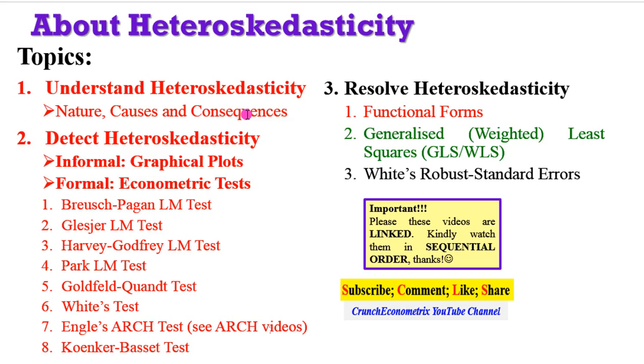We have also covered how heteroskedasticity can be detected using both informal and formal approaches. In resolving heteroskedasticity, we have talked about how functional forms of a model can actually eradicate that problem. Now in this tutorial, I will show you how you can use the generalized or the weighted least squares in correcting for heteroskedasticity.